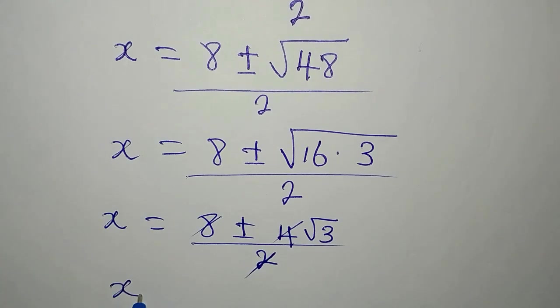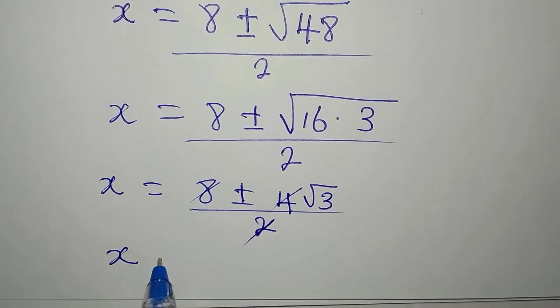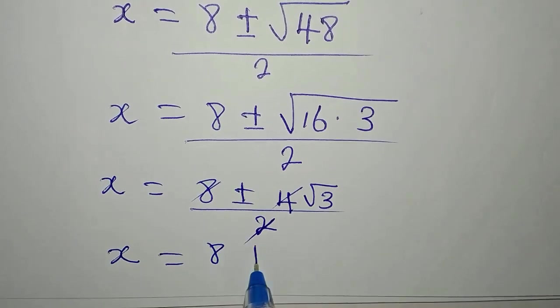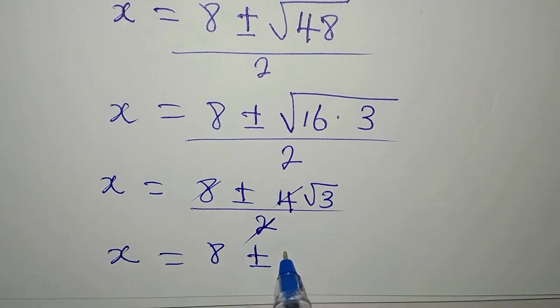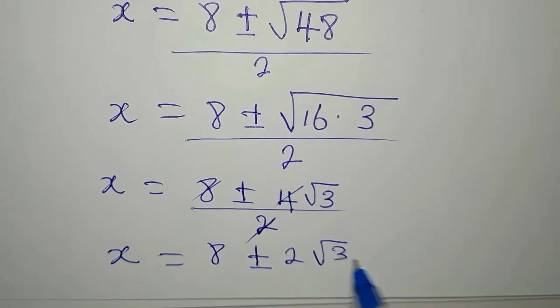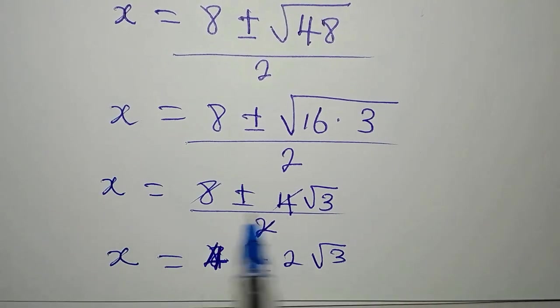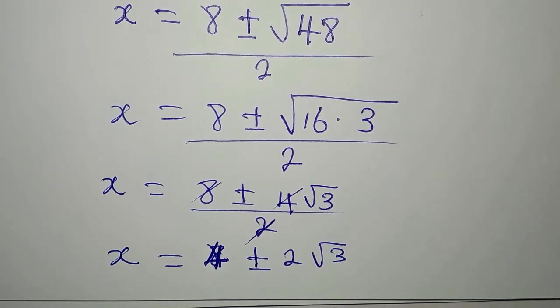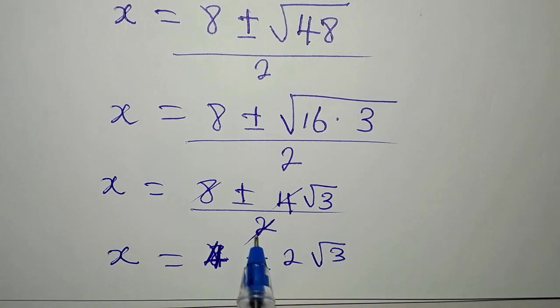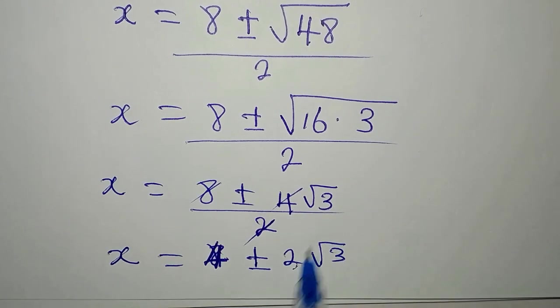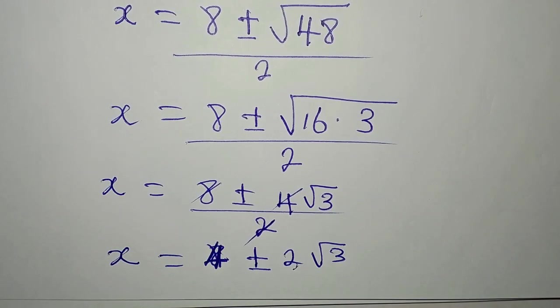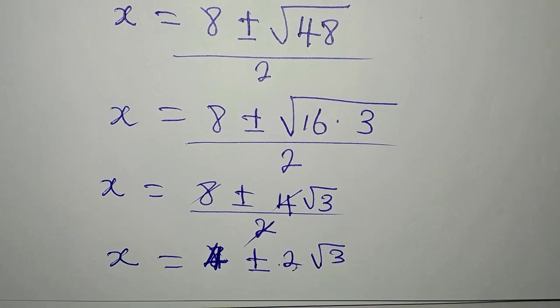So X now will be equal to 8 plus or minus 2 root 3. No longer 8 but 4 because 2 has gone into 8 and it's giving us 4. So 2 into 4 is giving us 2. Then root 3 comes down. We cannot add these 2 because this is attached to the root. What do we do? Let's continue.